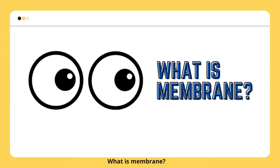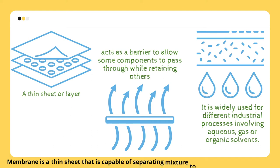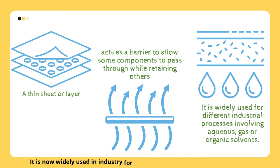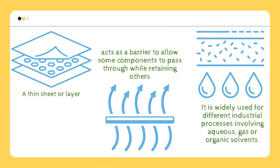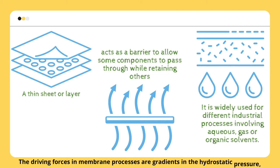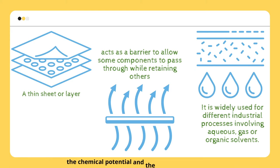So, what is membrane? Membrane is a thin sheet that is capable of separating a mixture to produce desired products. It is now widely used in industry for different separation processes involving aqueous, gas, or organic solvents. The driving forces in membrane processes are gradients in the hydrostatic pressure, the chemical potential, and the electrical potential.